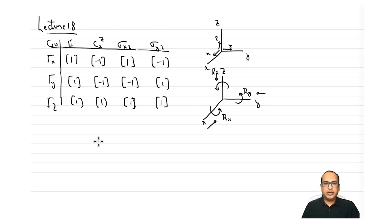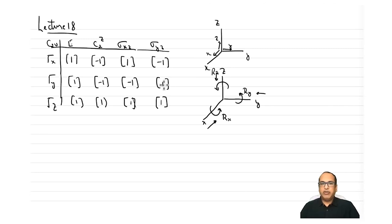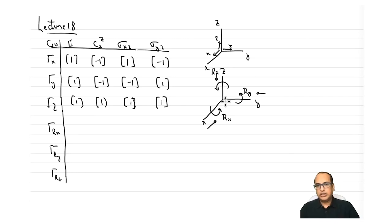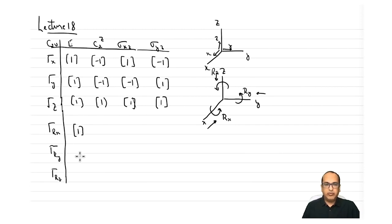We'll see how various transformations look under Rx, Ry, and Rz as the basis set. Under E, all characters for Rx, Ry, and Rz are +1, just as for τx, τy, τz. Since each is a single basis set, the matrix is 1×1, so we write +1 for all three under E.